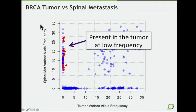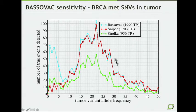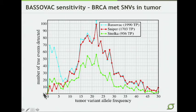We use these events to test the sensitivity of our algorithms. This is a comparison between three algorithms: BASIVAC, our new caller; Sniper, our old caller; and Strelka, a caller from Illumina which purports to do better on low-frequency events. BASIVAC and Sniper detect a lot of events with very comparable performance at high and mid variant allele frequencies. Strelka doesn't do as well, but at about 10 percent there's an inflection point where Sniper just isn't able to detect events. Strelka does a little bit better, but BASIVAC detects a huge number of these very low-frequency true positive events.